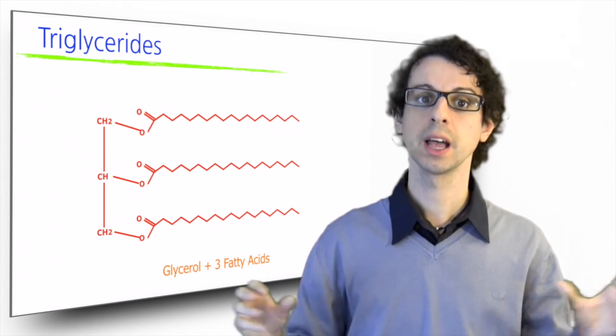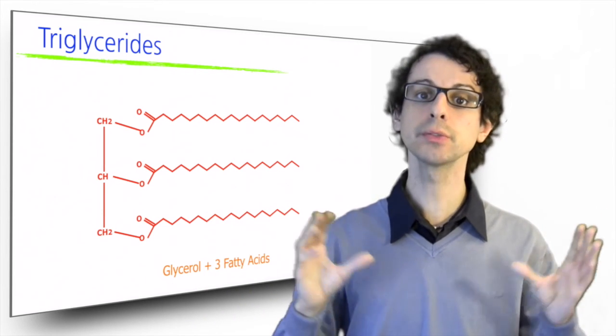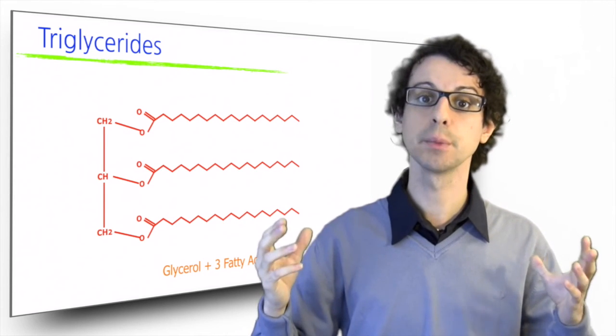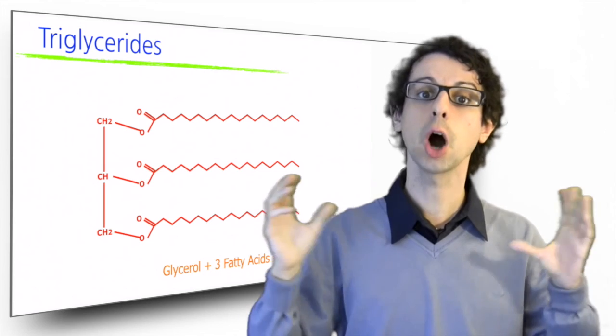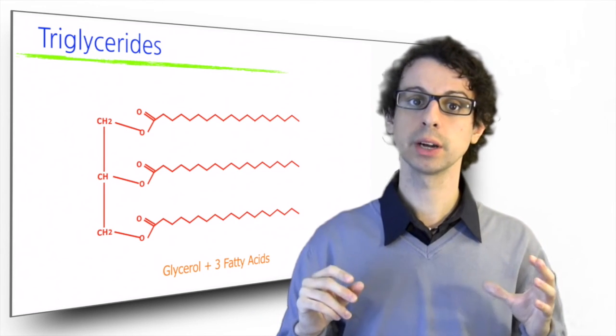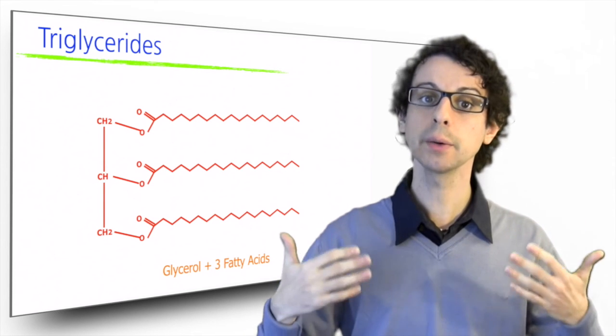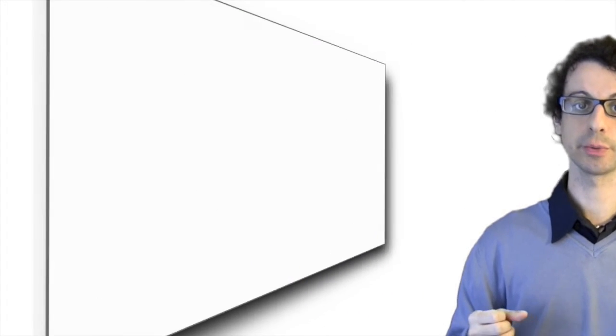So this is a triglyceride. Now, the three fatty acids are not free anymore, but clumped together, and they are not acidic anymore because the acidic group is occupied in a bond. This triglyceride can now be stored in our adipose tissue and then broken down again when needed for energy production.